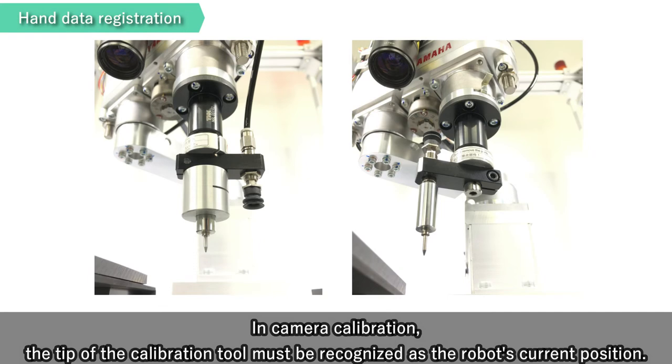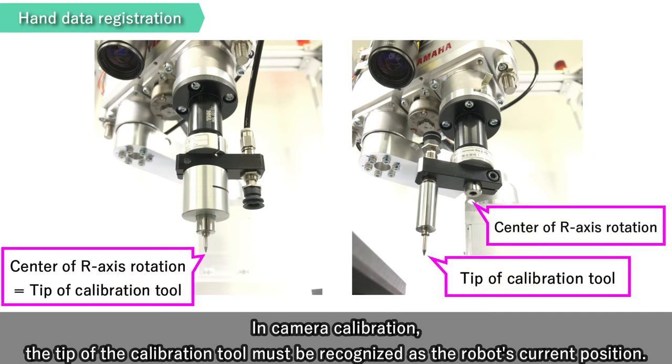In Camera Calibration, the tip of the calibration tool must be recognized as the robot's current position.